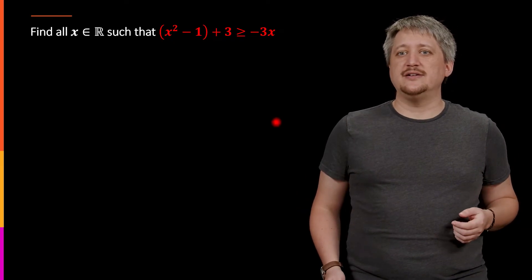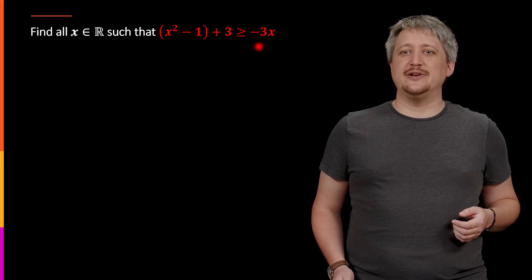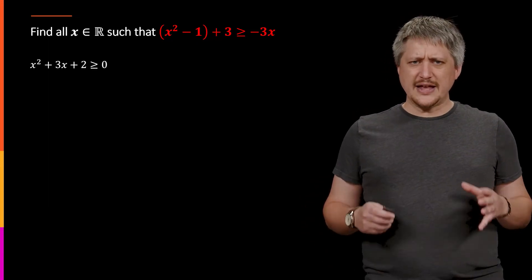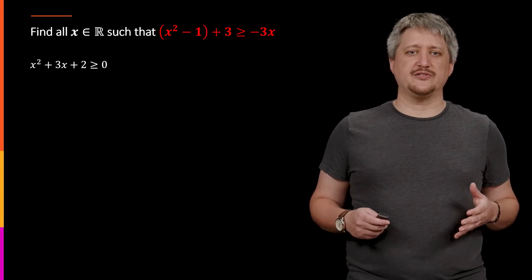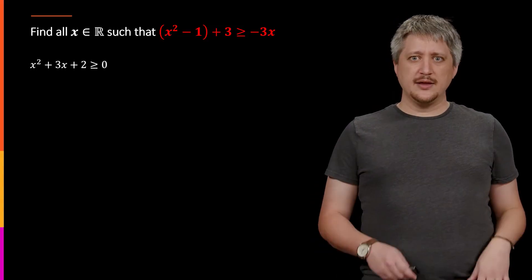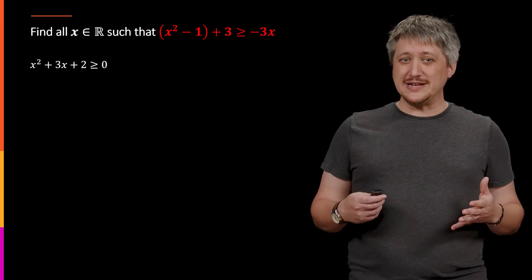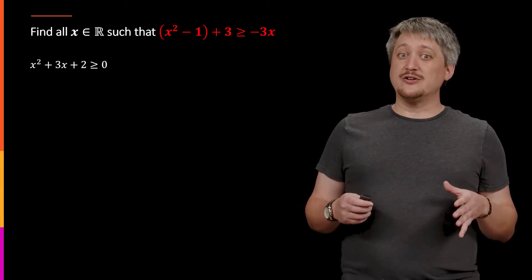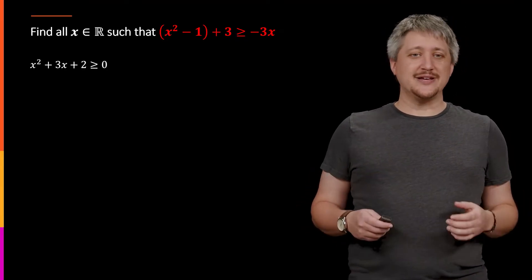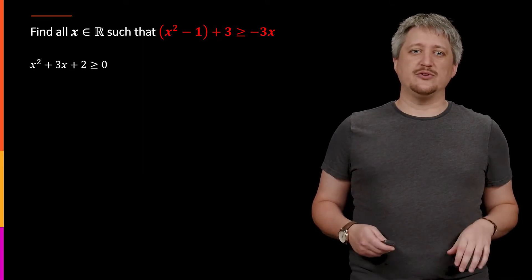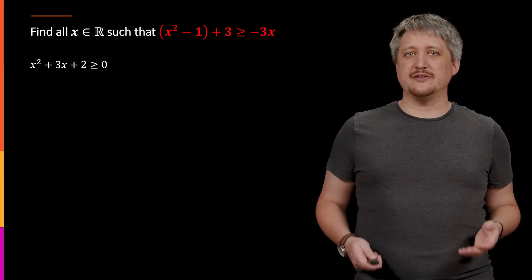So in this case, I can move the 3x over. So I can move this negative 3x, I can move it over, and I can lift these parentheses and rewrite, combining like terms. And that gets me this x squared plus 3x plus 2 greater than or equal to 0. Now, I'm thinking about the solution process as if it were an equality.